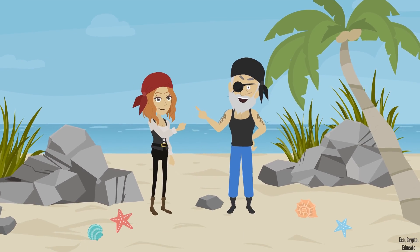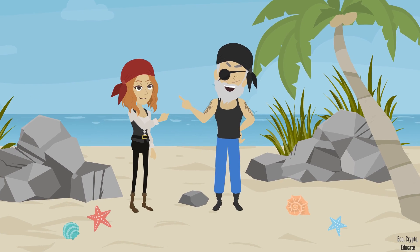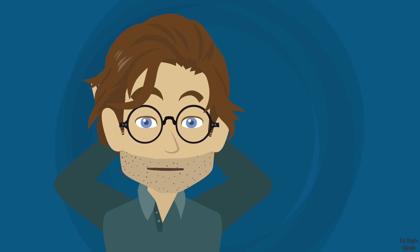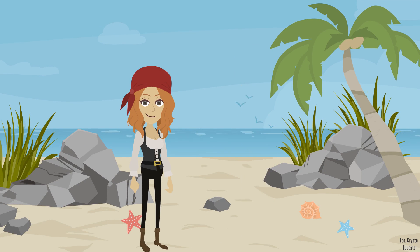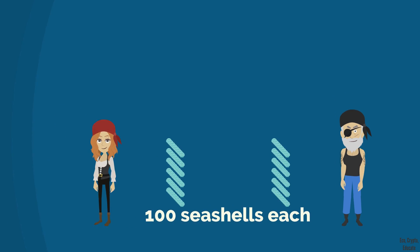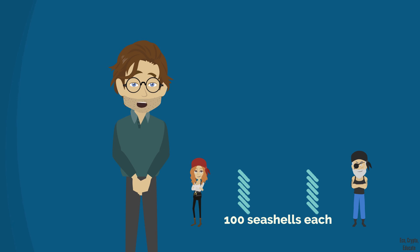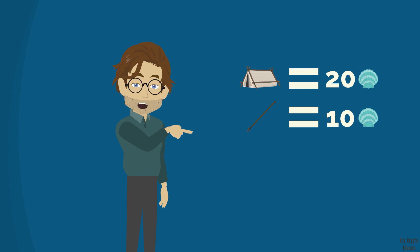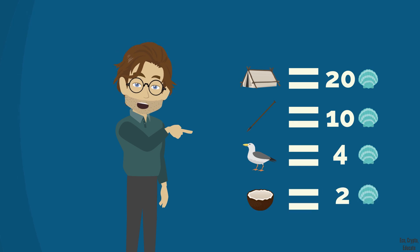To make life easier in their exchanges, Anna and Barry create a money they decided to call the shell. Guess what they chose to materialize their money? Shells. My imagination wasn't that prolific at this point. Now they only need to exchange shells, and it becomes greatly simpler. For a start, they agree to share 100 shells each. From that time, the shells are circulating from one to the other, allowing them to give a value of conversion to everything. They end up agreeing: a shelter is valued at 20 shells, a harpoon 10 shells, a seagull 4 shells, and an open coconut 2 shells.